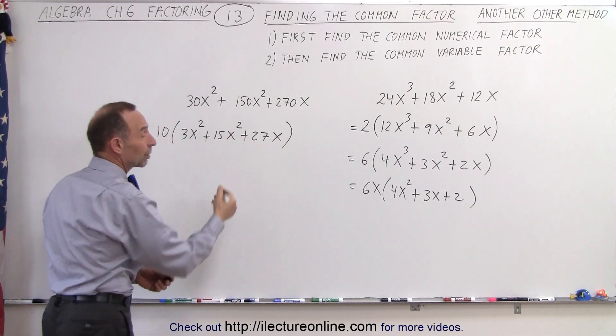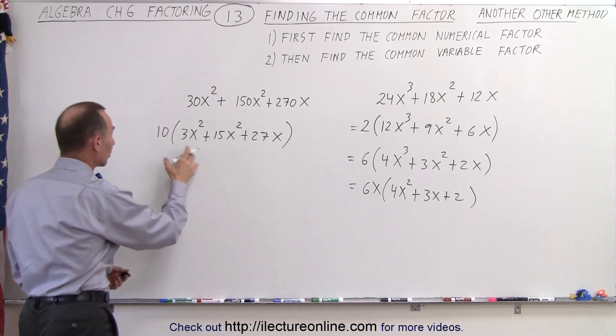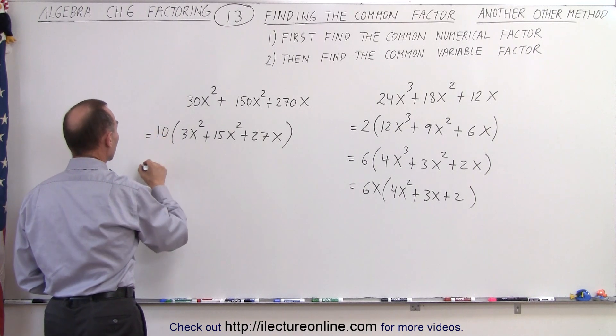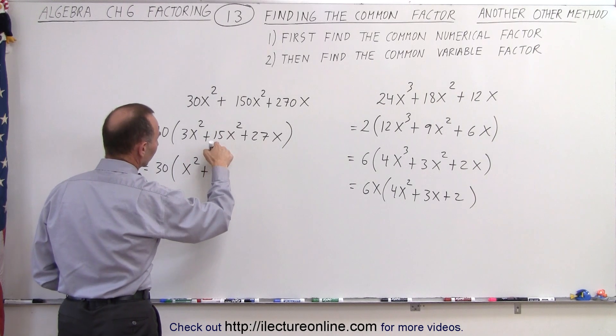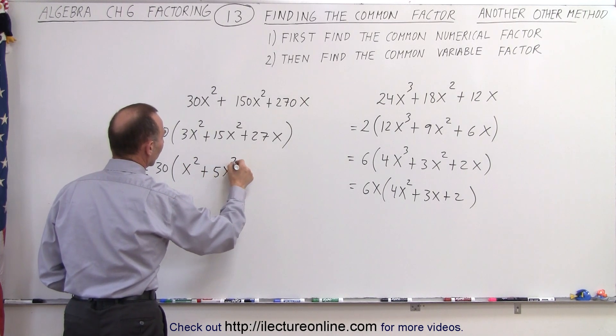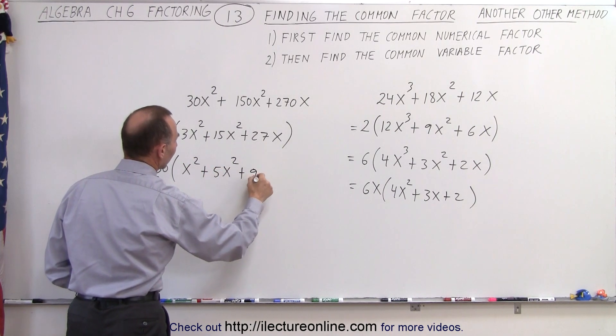I can pull out another 3. So 3 times 10 is 30, so this can be written as 30 times (x² + 5x + 9x), where 3 goes into 15 gives 5, and 3 goes into 27 gives 9.